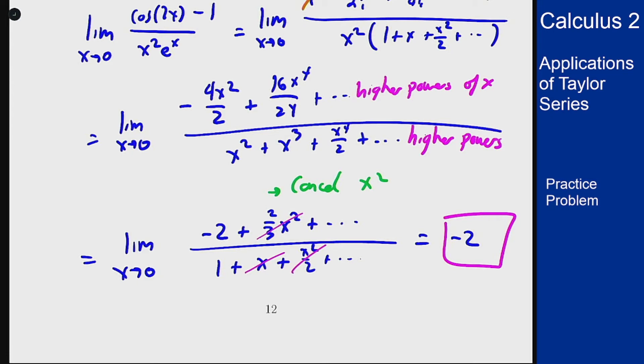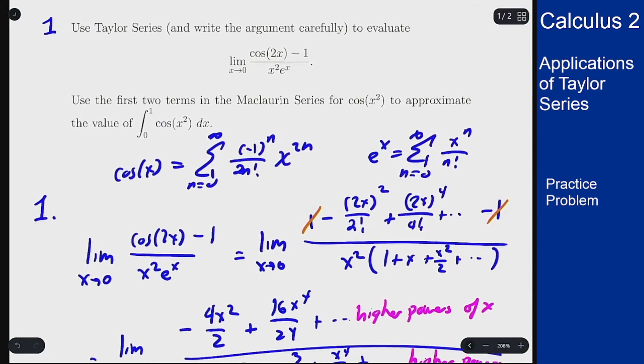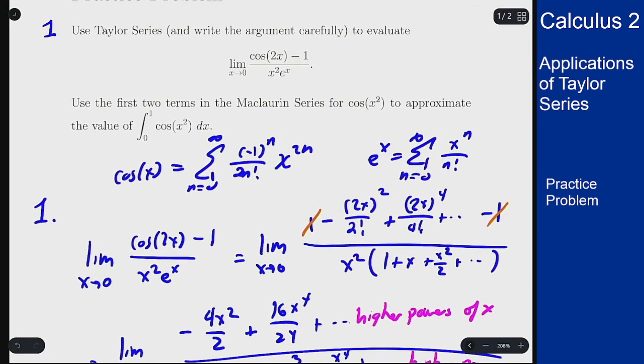For the second problem, we want to use the first two terms of the Maclaurin series for cos(x²) to approximate the integral from 0 to 1 of cos(x²) dx.